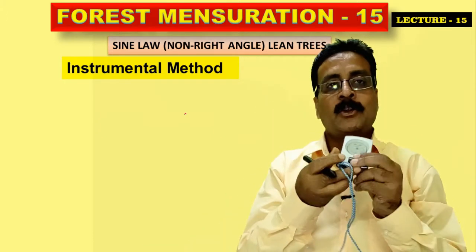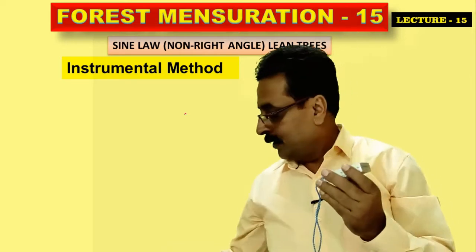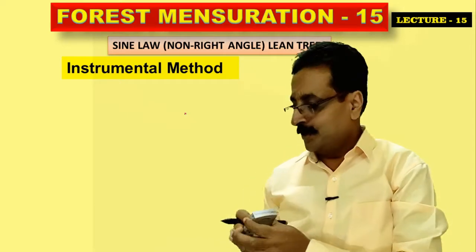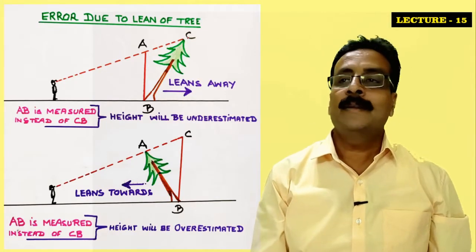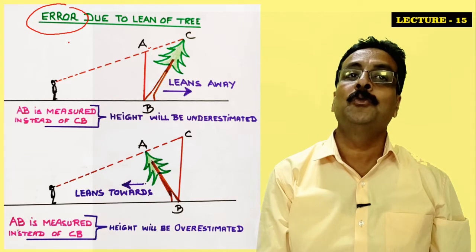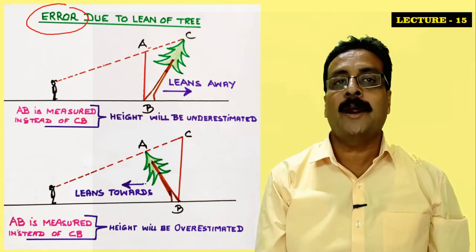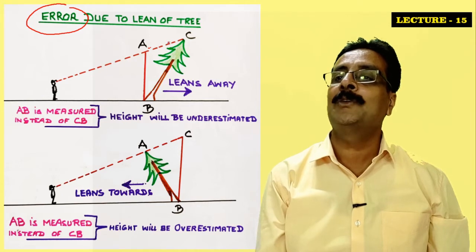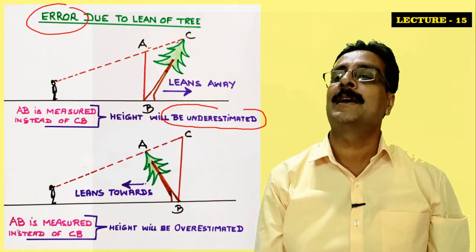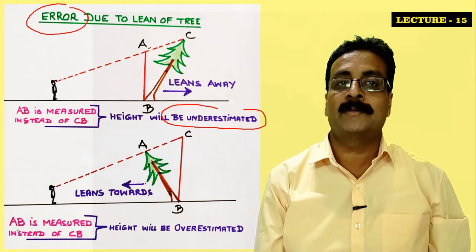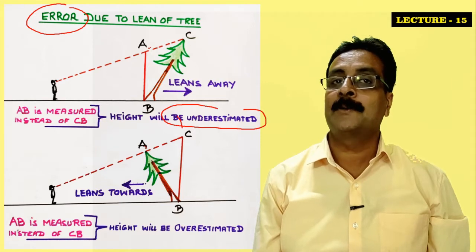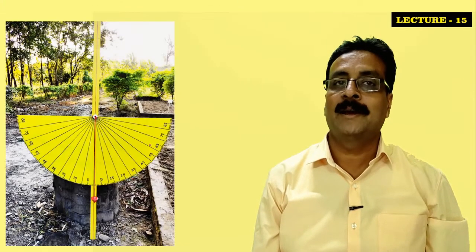This is again an instrumental method — we may use a clinometer or an Abney level to measure the degrees. There is an error just because of this — we have to use the sine method, because the sine method is for non-right-angle triangles. When the tree leans away, the height is always underestimated — the tree height may be more but we record it as less. When it leans towards the observer, the height may be less but it shows more — it is overestimated.